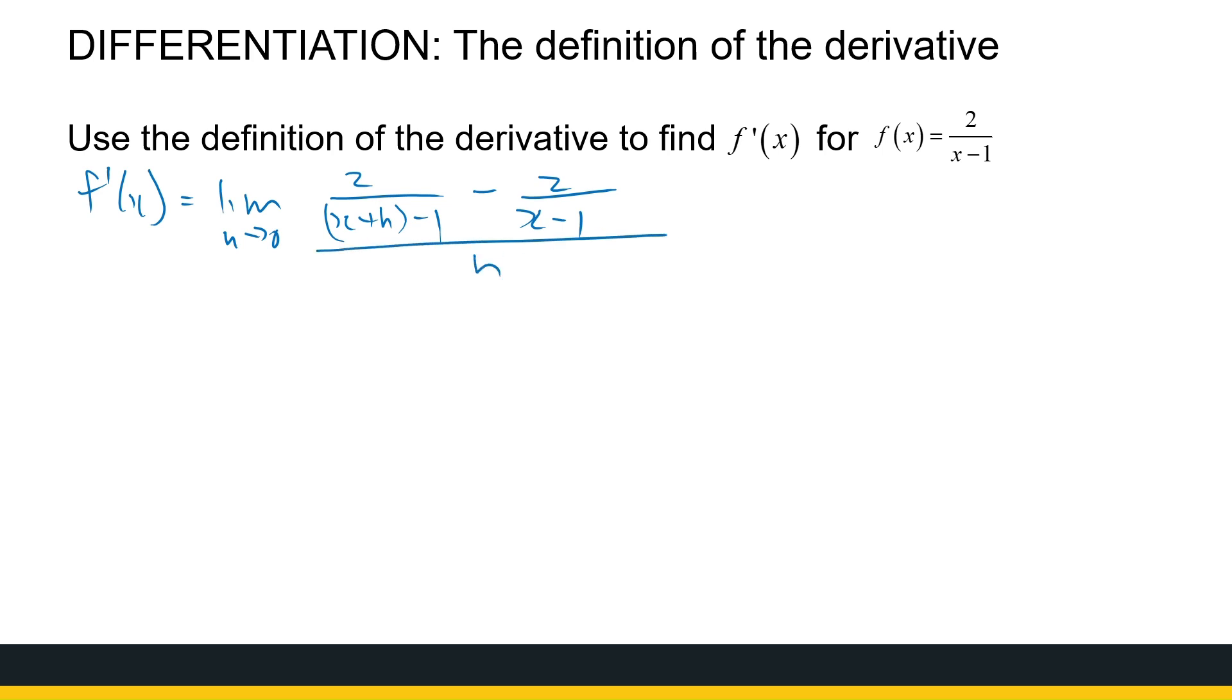Now, everything divided by h, I've got fractions over fractions. To me, that's too clumsy. So I'm just going to multiply that with 1 over h. That means the same as dividing by h. It's just a little bit neater.